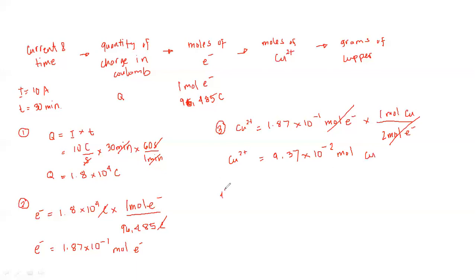Lastly, we can calculate now the amount of chemical reaction, which is the mass of the copper. To solve this, the amount of copper should be multiplied by this rate, wherein in every one mole of copper, there is 63.5486 grams.